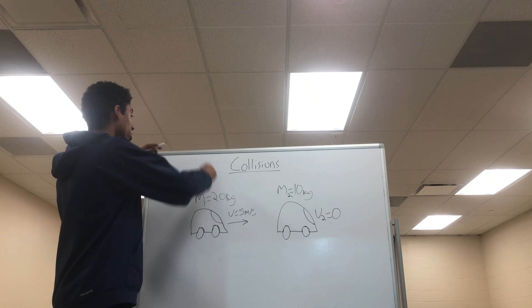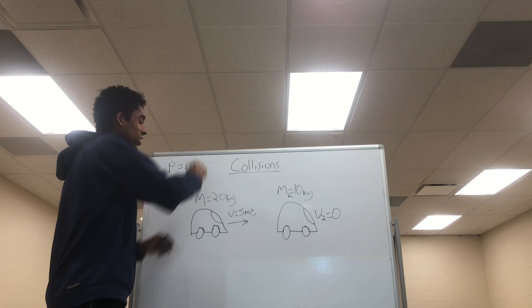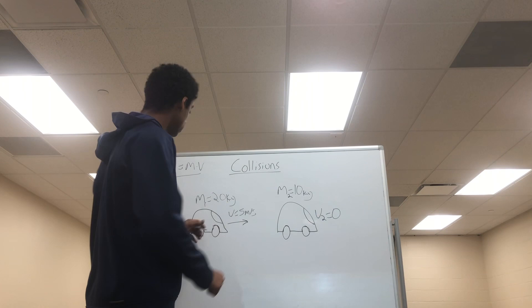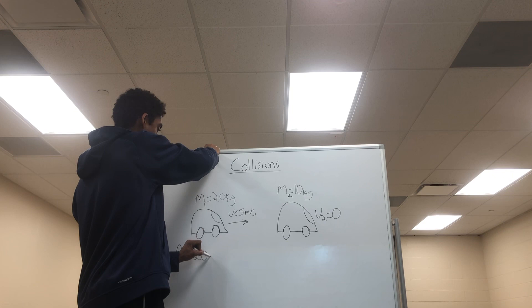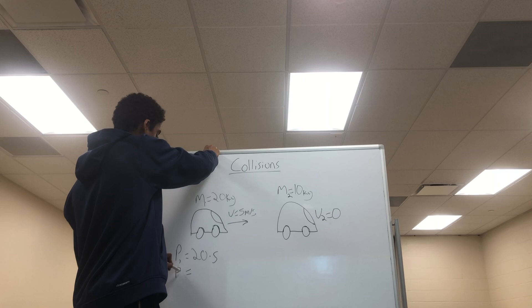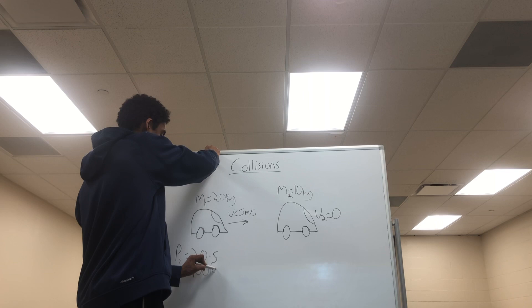As expressed by our previous equation, p equals mv, we can calculate the momentum of both cars. The momentum of car one will be 20 kilograms times 5 meters per second, giving us a momentum of 100 kilogram meters per second.